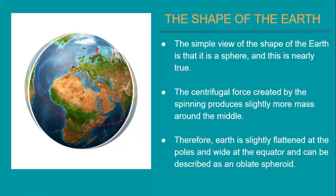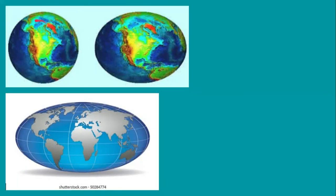Earth is slightly flattened at the poles and wide at the equator. Here you can see this is the perfect sphere, which is not the exact shape of the earth. The exact shape of the earth has more mass at the middle — it is more wide from the equator and flattened from the poles, as you can see in the diagram.